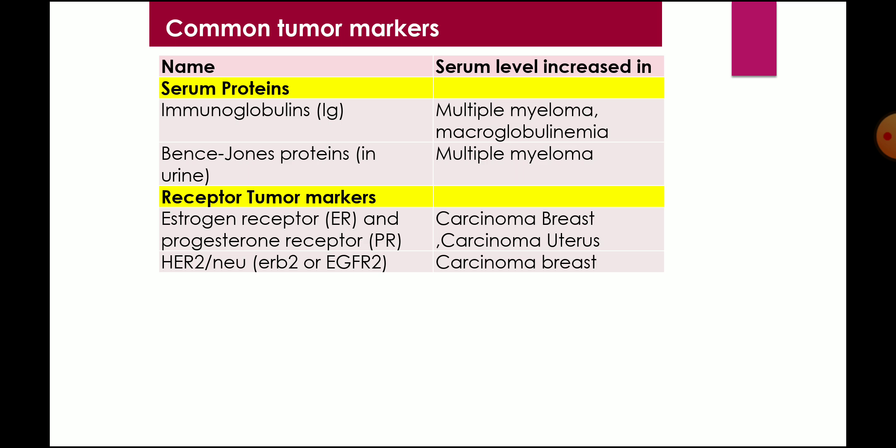Receptor tumor markers are very important nowadays. Oestrogen receptor (ER) is mainly in carcinoma of the breast. Progesterone receptor (PR) is in carcinoma of the uterus and carcinoma of the breast. HER2/neu — also called ERBB2 or EGFR2 — is also a tumor marker for carcinoma of the breast. You have to not only mention the name of the tumor marker but also mention the tumor in which it is elevated — that is very important. Simply writing alpha-fetoprotein or CA-125 is not enough; you must write which tumor produces these tumor markers.